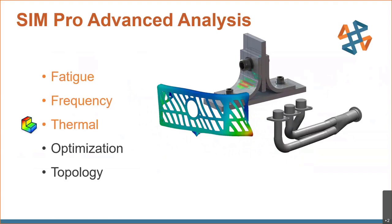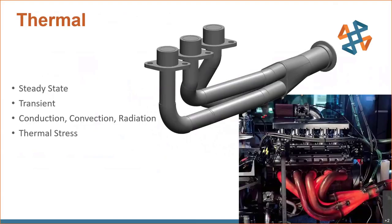Next is thermal analysis. We can look at steady state — a constant temperature load to see what equilibrium looks like — or transient, where we ramp temperatures in and out over a time curve to see how long the heat soaks or cools. This is full conjugate heat transfer: conduction, convection, and radiation are all accounted for. We can also use the temperature profiles to derive thermal stress. Our example is a header on a high-horsepower engine.